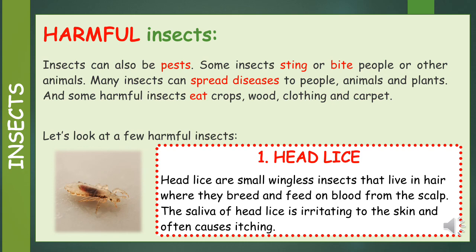Number 1: Head lice. Head lice are small wingless insects that live in hair, where they breed and feed on blood from the scalp. The saliva of head lice is irritating to the skin and often causes itching.